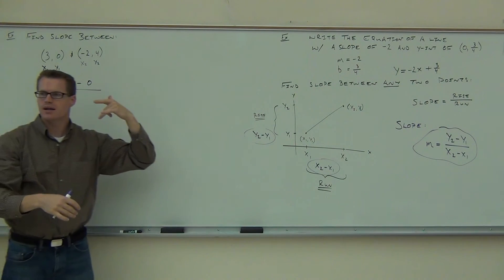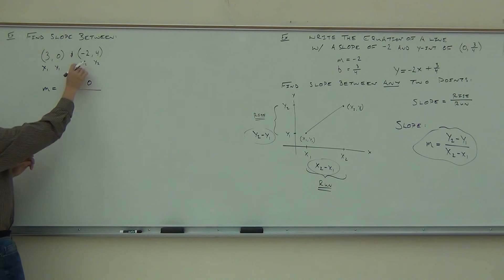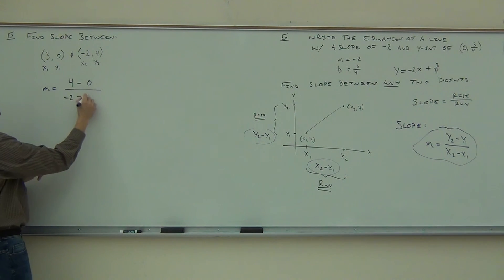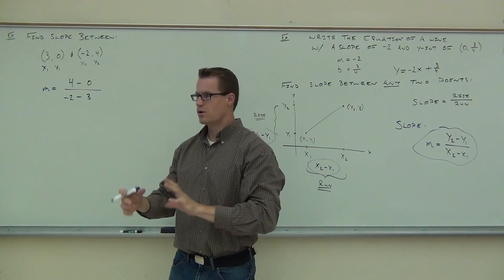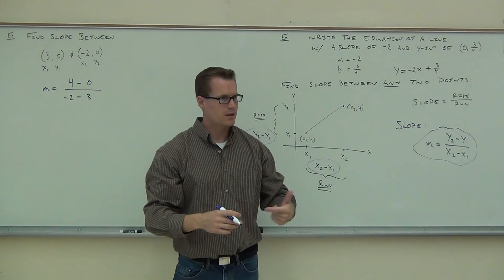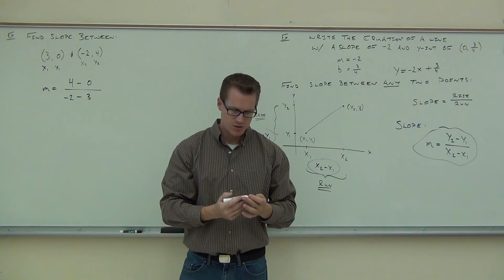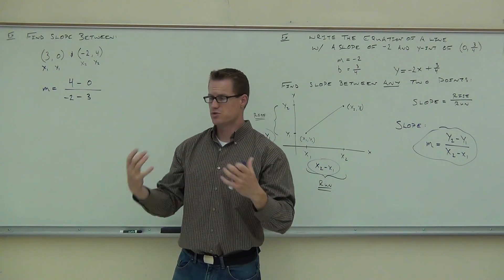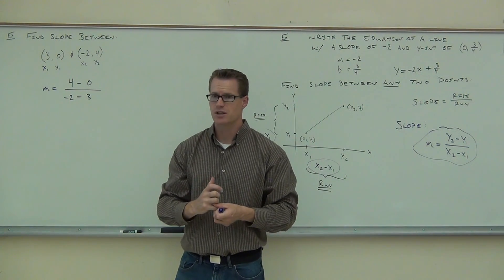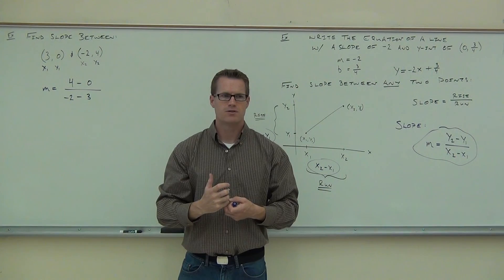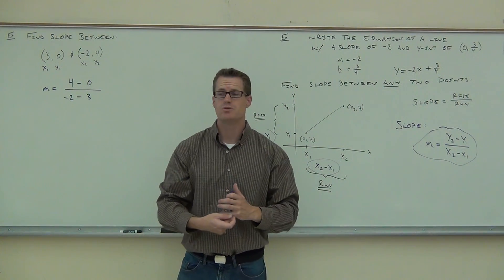So we do 4 minus 0 over negative 2 minus 3. Write this out on your paper so you can see it clearly. Take your time on slope — that's where mistakes happen. It's like rushing through factoring rational expressions: if you get the factorization wrong, the whole problem falls apart. Same with slope. Make sure you have the signs right before moving on.